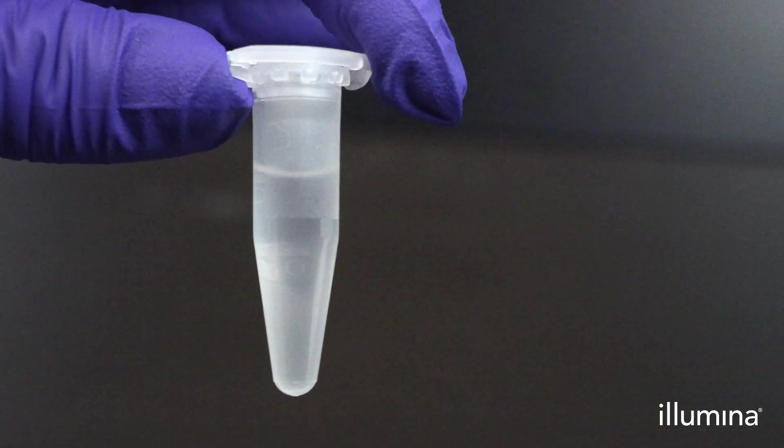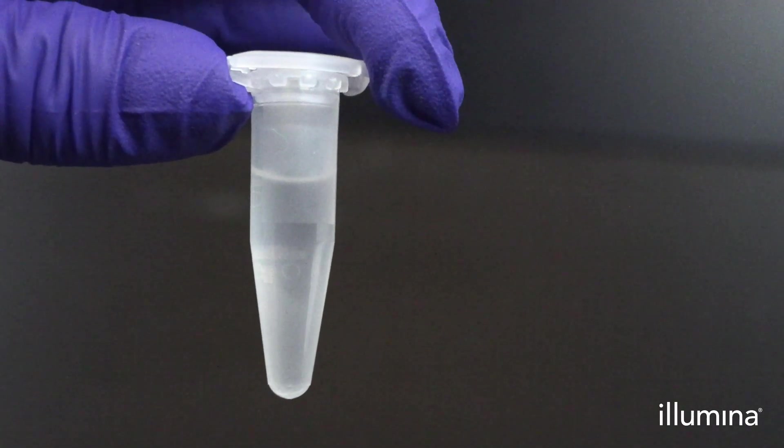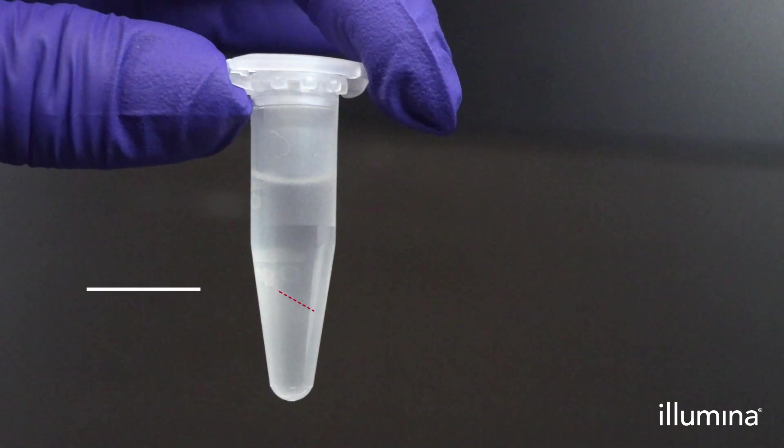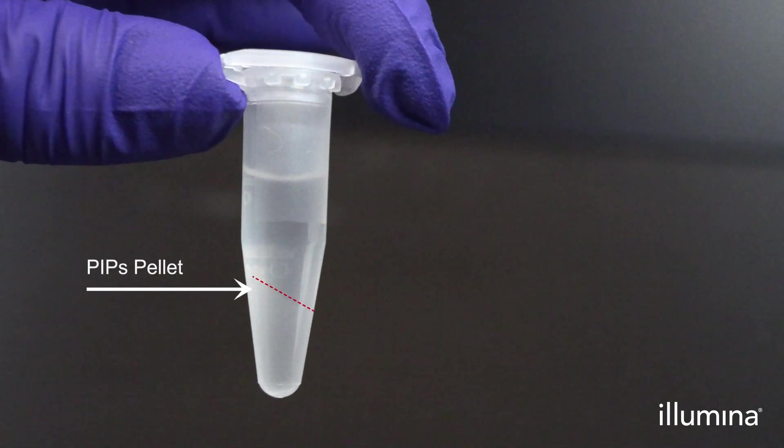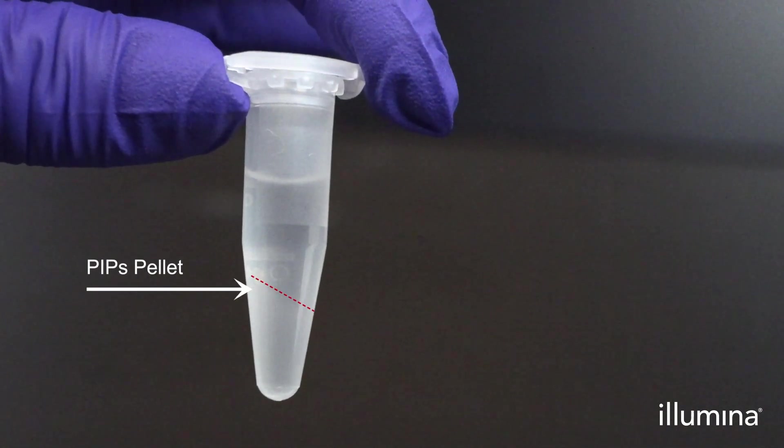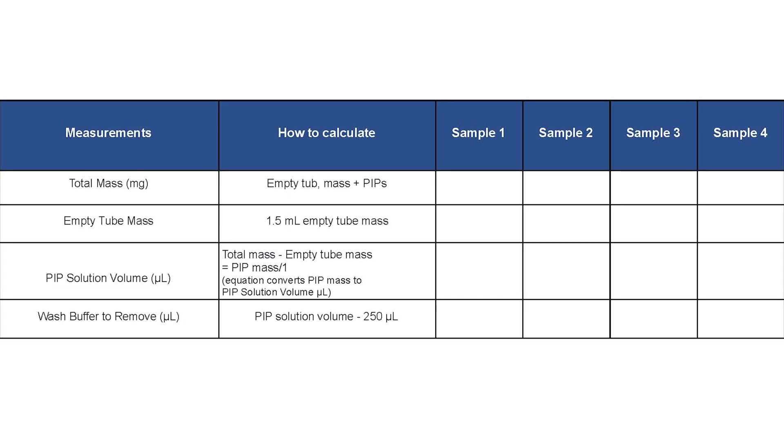After transferring the third and final wash in the 1.5 ml tubes and spinning down in a benchtop microcentrifuge, check each sample's pips pellets and record any bead loss. To convert milligrams weighed into microliters of sample within the tube, record total mass and empty tube mass.